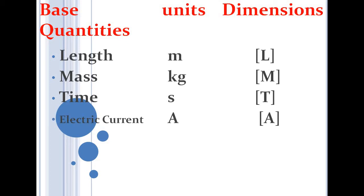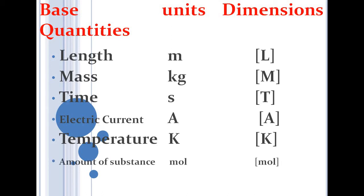Electric current has SI unit ampere and dimension I. Temperature has SI unit kelvin and dimension K. Amount of substance has SI unit mole and dimension mol. Luminous intensity has SI unit candela and dimension cd. These are the seven fundamental quantities with their units and dimensions.